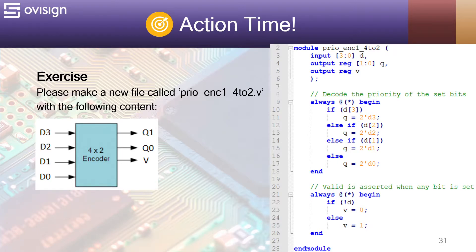We first declare the module's ports at lines 3 to 5. Q and V are output reg because they are used on the left-hand side of always blocks. At line 9 we decode the priority of the D port bits, using always@(*) since it is the best practice for combinational blocks.